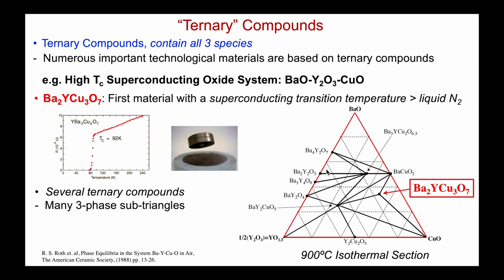Now we can see all of these many different sub-triangles. In what areas does Ba₂YCu₃O₇ appear? Obviously the pure compound exists at its particular composition, but anywhere in the surrounding triangles it would form as one of the three stable phases.